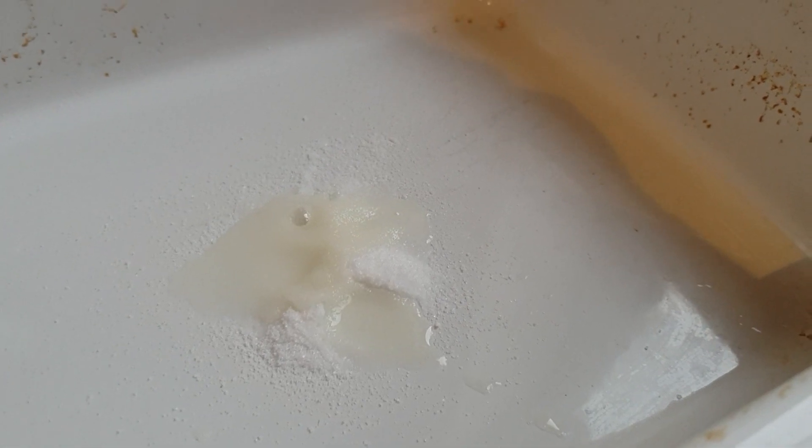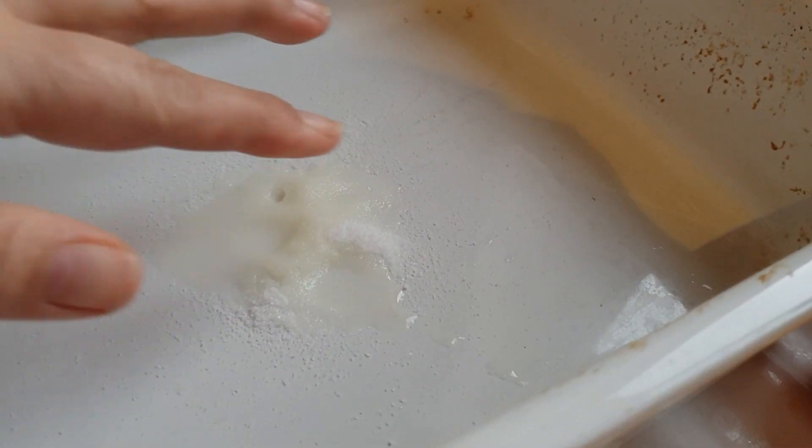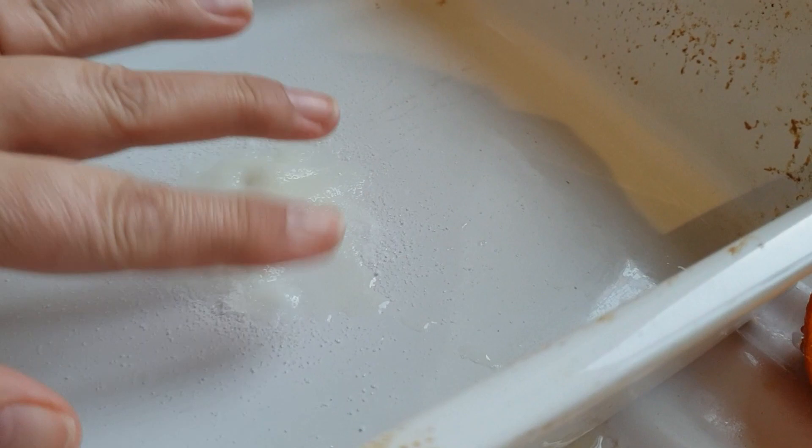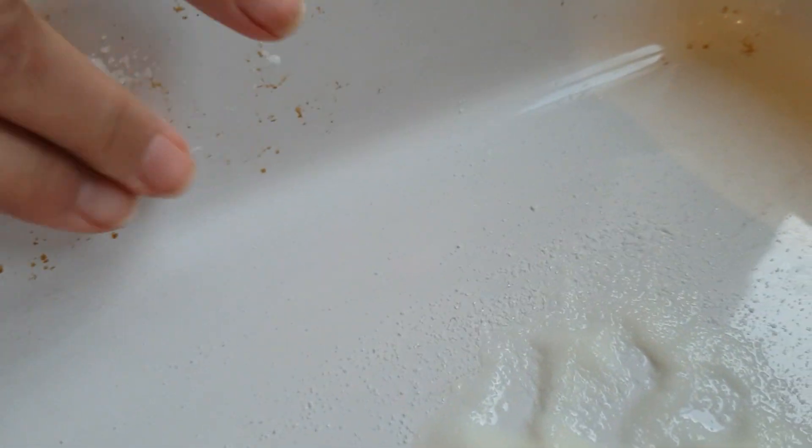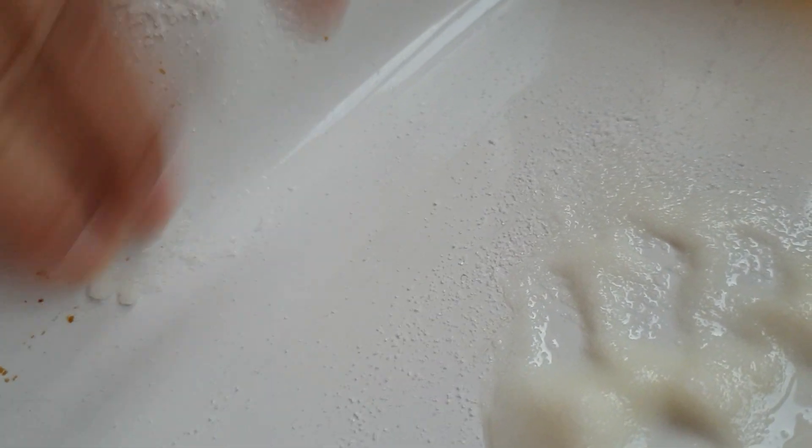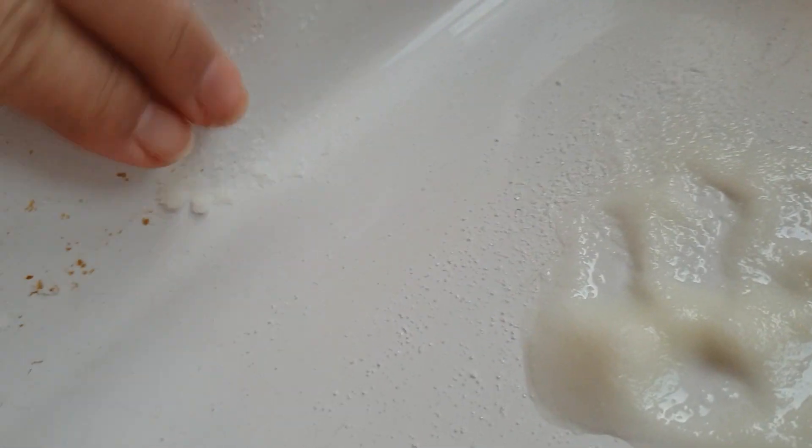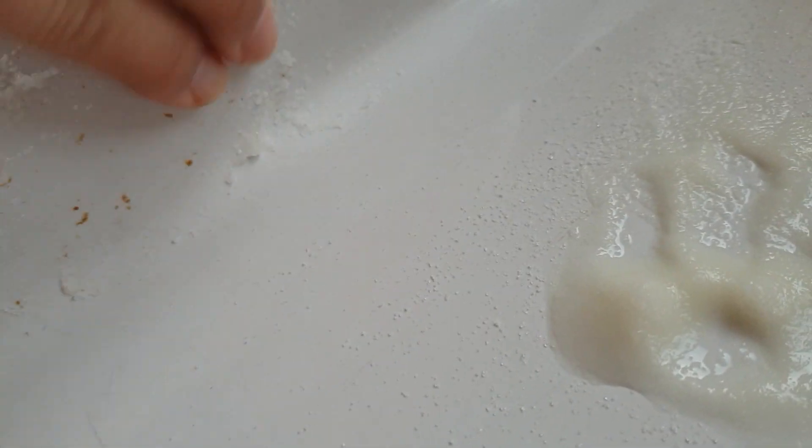Mix the lemon juice in with the salt, not much, just a little, just so that it goes to a paste. You just want to apply it to the burnt-on bit, just with your fingers. You don't need anything else.